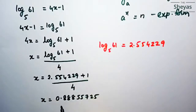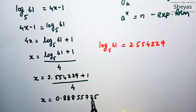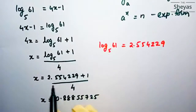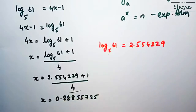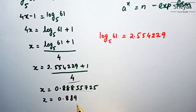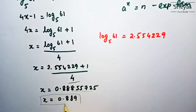When I calculate this using a calculator I get x is equal to 0.88555725. Rounding up to 3 decimal places, x is equal to 0.889. Thus I have got the value of x.